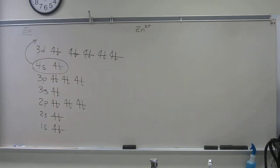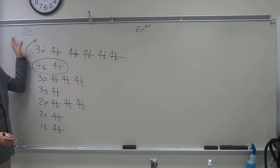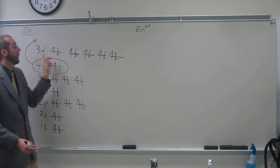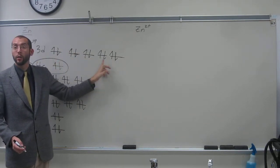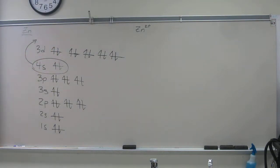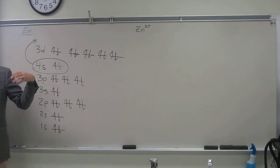So what happens is when we make the zinc 2 plus ion, the electrons that are being removed are not the 3D electrons, not this electron and this electron, but they're actually the 4S electrons. So the S electrons are removed before the D electrons if you're filled up D-wise.